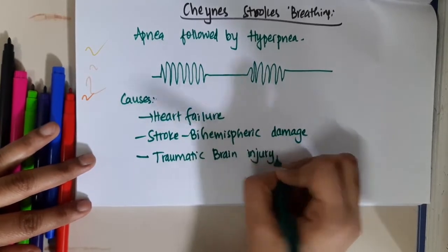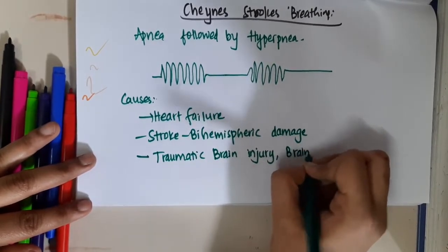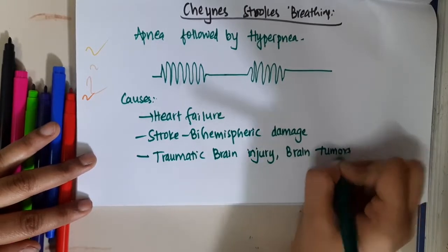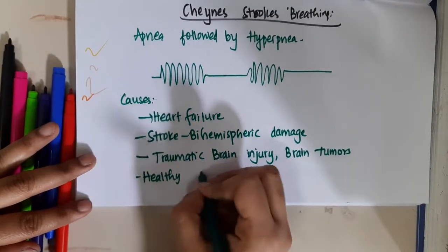It can occur in traumatic brain injury, brain tumors. You can see Cheyne-Stokes breathing. It can also occur in healthy people.